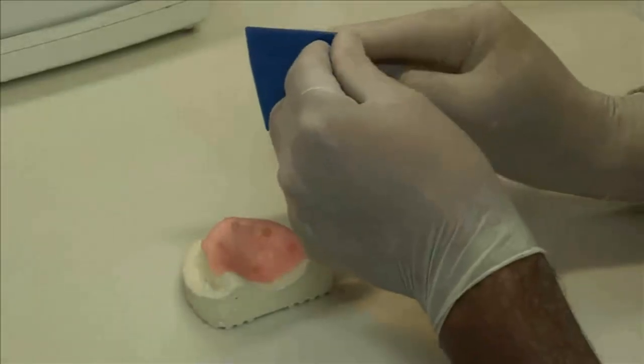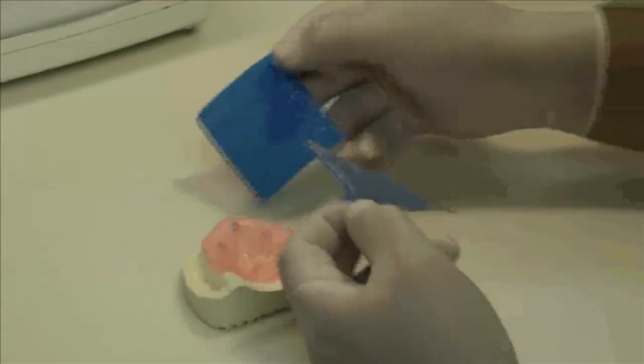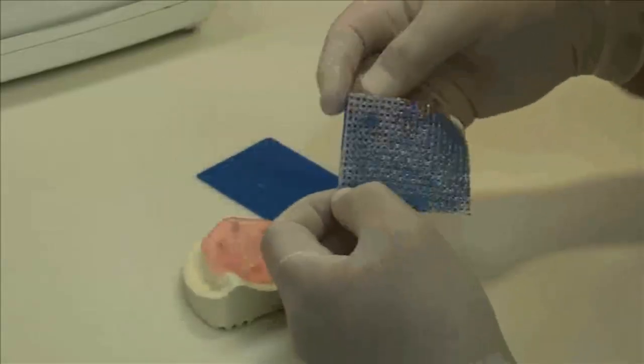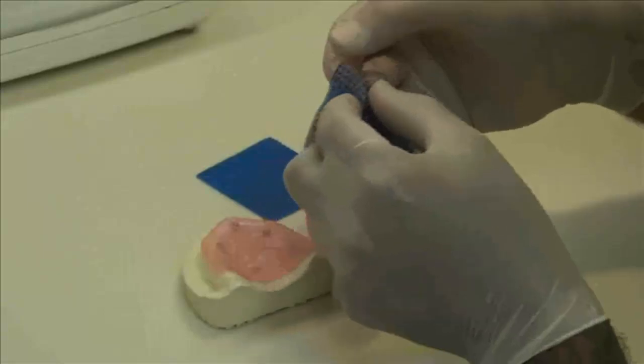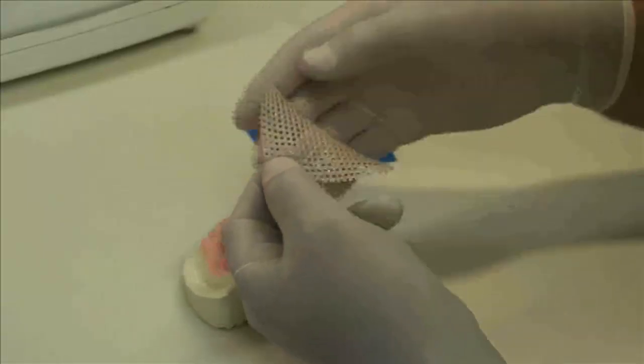Remove the plastic cover and position the FiberForce mesh onto the model. It's not necessary to adapt the mesh closely to the model at this time. This will be accomplished using the splint vac unit in the next stage of the process.